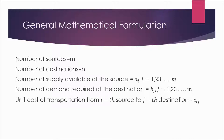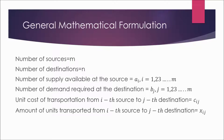Let cij represent the unit cost of transportation from the i-th source to the j-th destination, and let xij be the amount of units to be transported from the i-th source to the j-th destination.